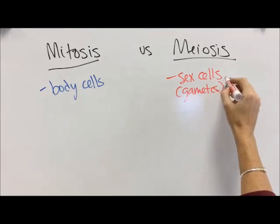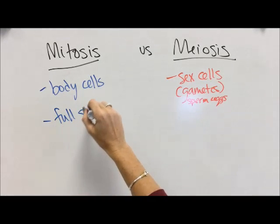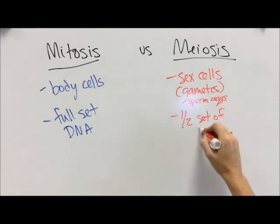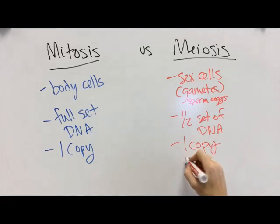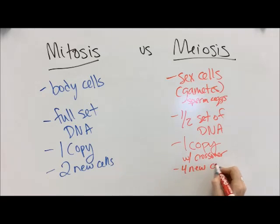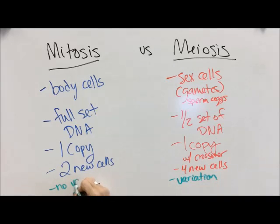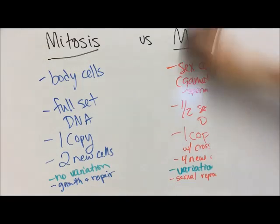So mitosis makes body cells; meiosis makes sex cells, also called gametes — they are sperm and eggs. Mitosis body cells have a full set of DNA, but in meiosis we only want a half set in the sperm and eggs. Mitosis has one copy and two new cells. In meiosis we get that crossing over for genetic variation and four new cells. In meiosis we increase genetic variation, but in mitosis we don't want variation — we do not need your body cells getting creative. Meiosis is for sexual reproduction; mitosis is for growth and repair in humans. So now we have both types of cell division.